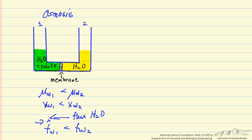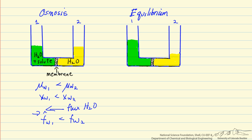Here I've used this symbol to indicate that we have a solution on the left, and on the right side is pure water. If we let this system go to equilibrium, the chemical potential of water on the left side equals the chemical potential on the right side, and therefore there is no flux. This happens because the pressure on the left side becomes greater than on the right side, and as we increase the pressure, we increase the chemical potential.